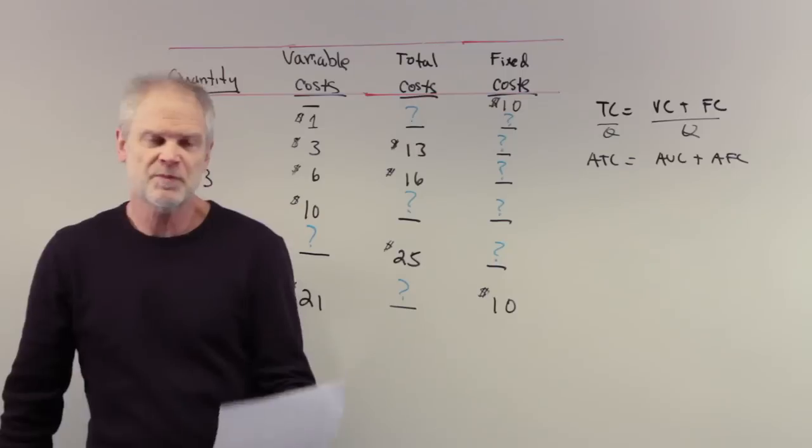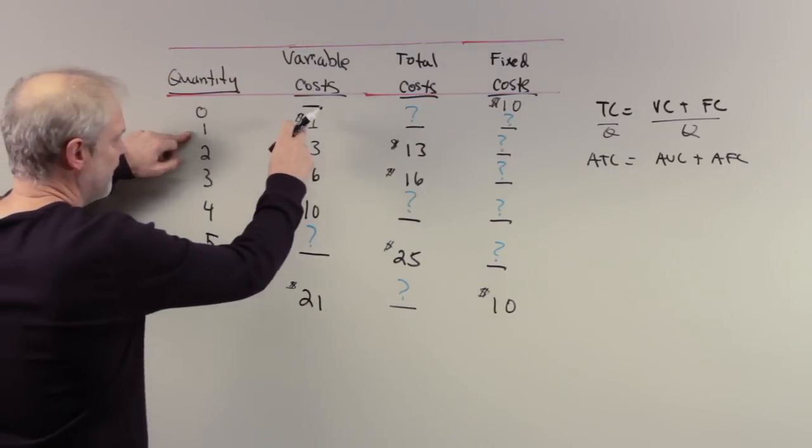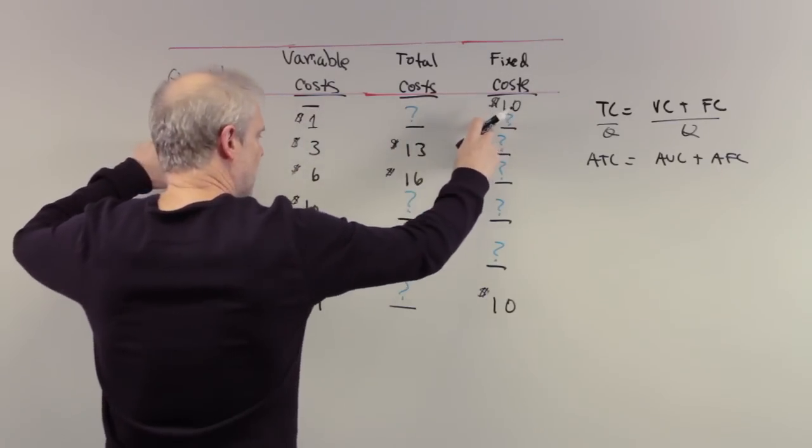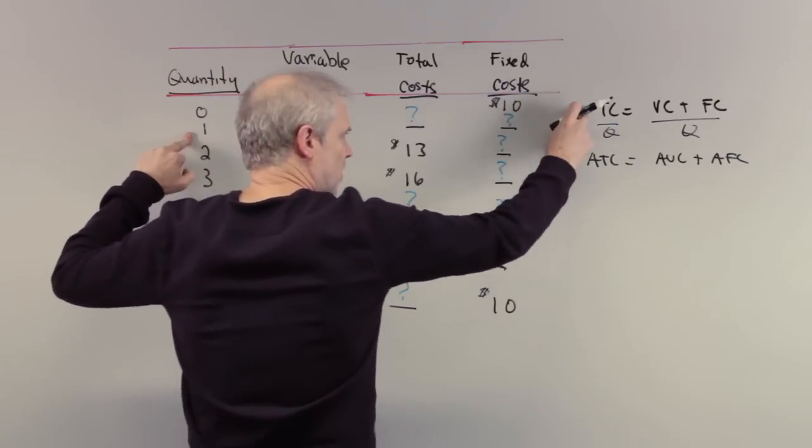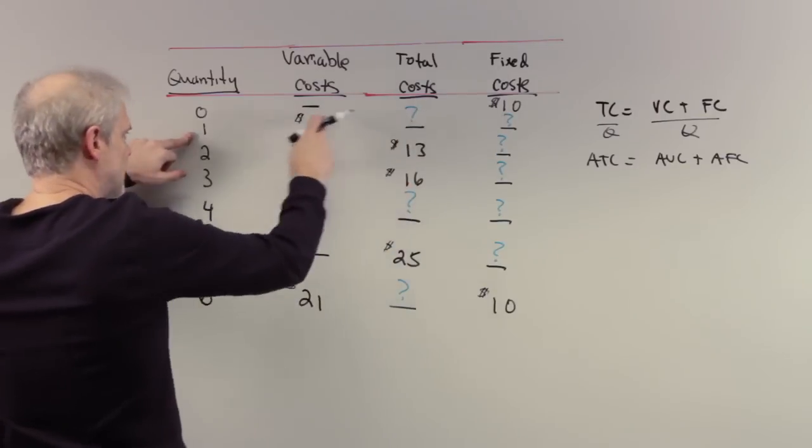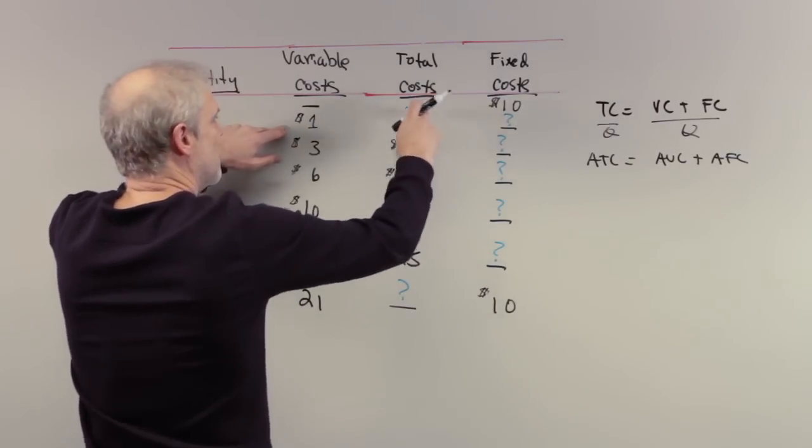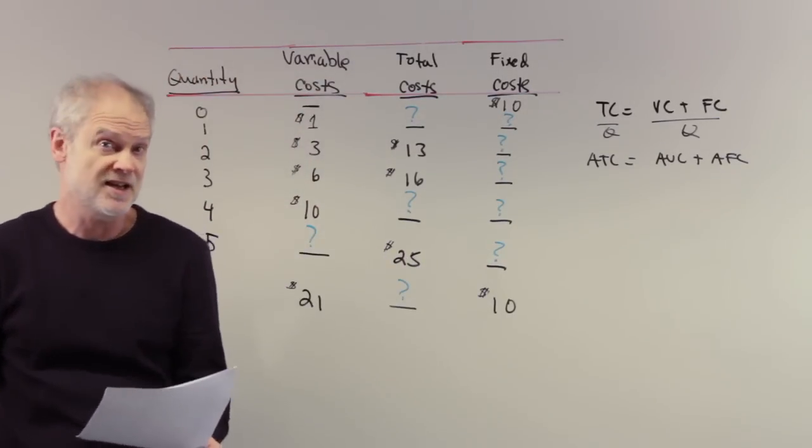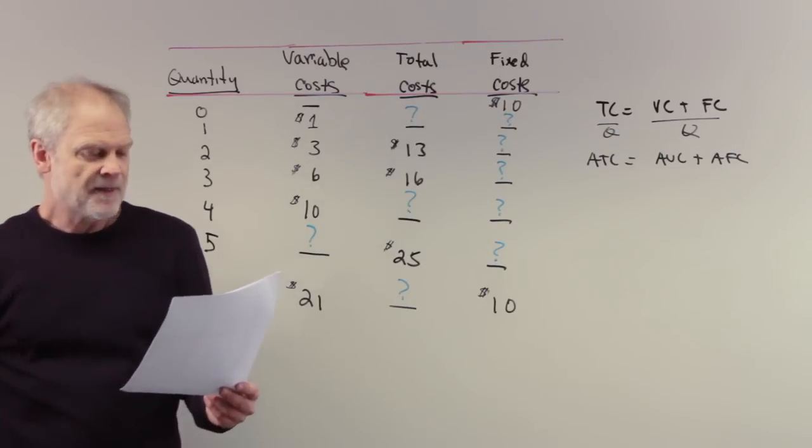Question three: the total cost of producing one poster. One poster has a variable cost of $1, total cost is a question mark, fixed cost is a question mark. But we know fixed cost is $10, and we know total cost is variable cost plus fixed cost. Therefore the total cost of producing one poster is $1 plus $10 fixed, or $11. That's answer C.